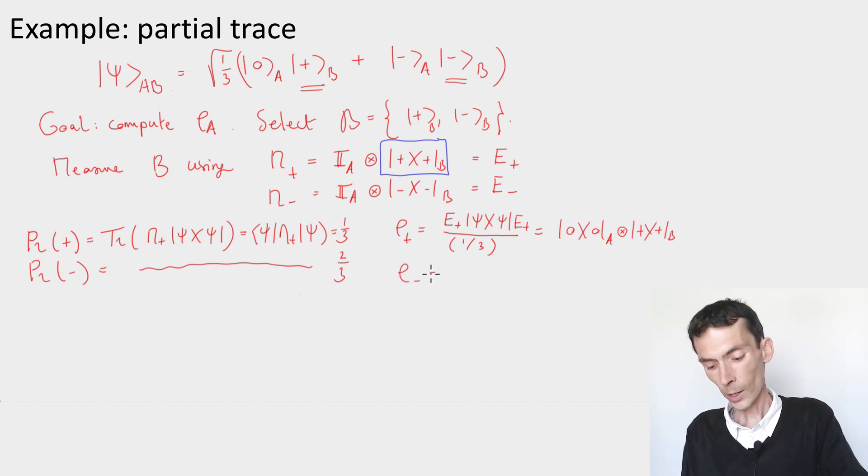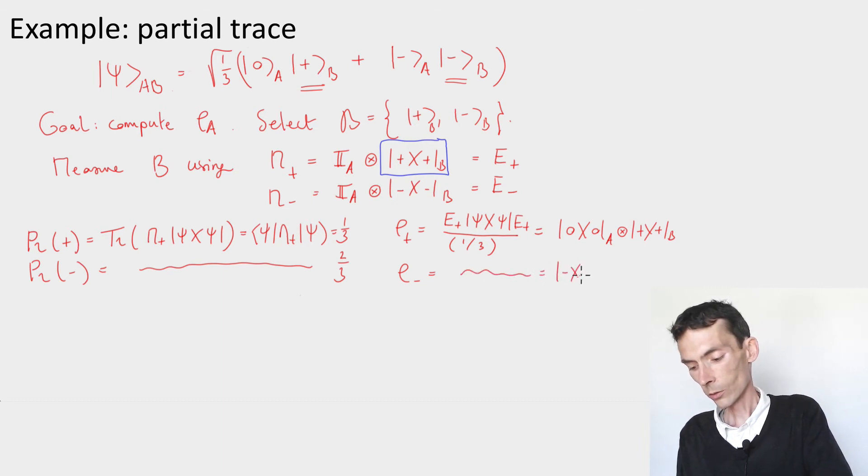Similarly if we compute rho minus, we can do the same calculation now with E minus, and we'll get minus on A, tensored minus on B.